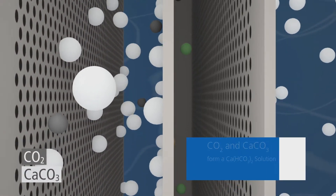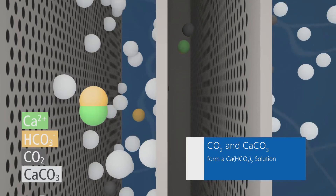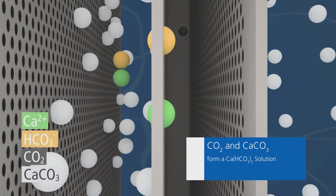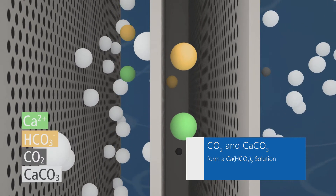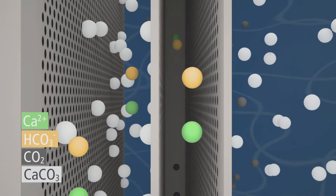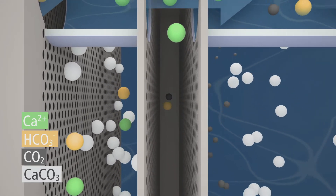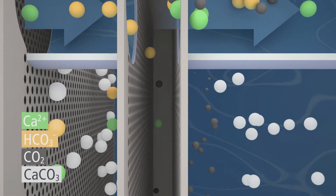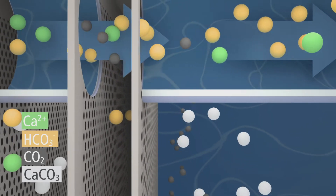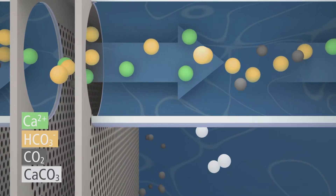Both react to form a calcium bicarbonate solution. The membrane acts as a barrier between the dissolved and undissolved calcium carbonate, so a completely clear calcium bicarbonate solution can be extracted from the reactor.